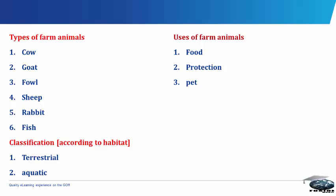Uses of farm animals. Farm animals serve as food. In meat production, it serves as meat and it is a form of providing energy and dietary protein for man.